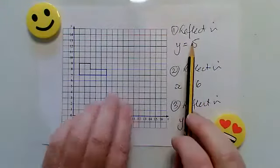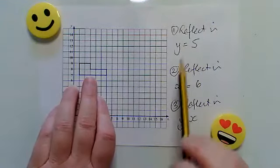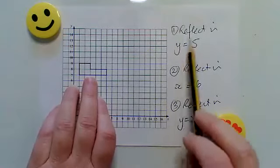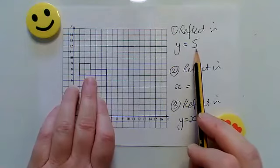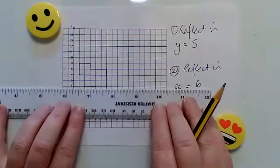First of all, I need to reflect this shape in the line y equals 5. The first thing I've got to do is draw that line in. So y equals 5 means that every point on this line will have a y-coordinate of 5. So it's going to cross the y-axis at 5.